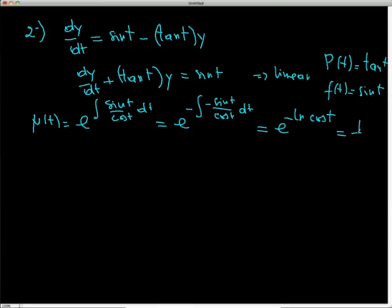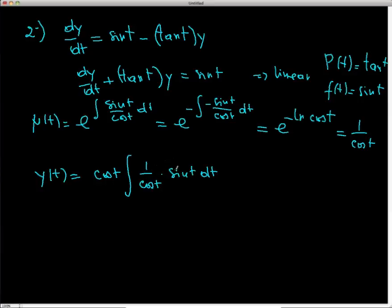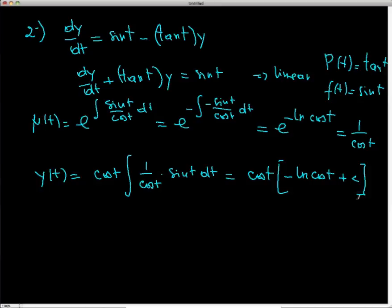Applying the formula: y(t) = (1/μ(t)) · ∫μ(t)·f(t) dt = cos(t) · ∫(sin(t)/cos(t)) dt = cos(t) · ∫tan(t) dt. Integrating sin/cos gives −ln|cos t| + C. So the explicit solution is y(t) = cos(t) · (C − ln|cos t|).